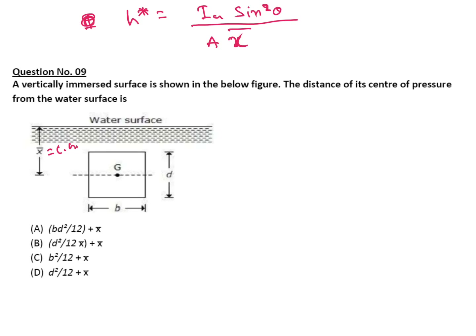Into h bar, instead of h bar they are writing distance of CG is x bar plus x bar. So here h star equal to Ig is bd cubed by 12 into 1 by area is b into d into x bar plus x bar. B cancels, d squared by 12 x bar plus x bar.